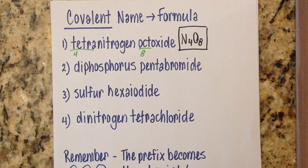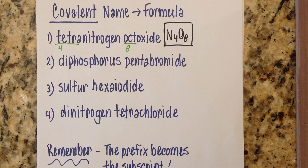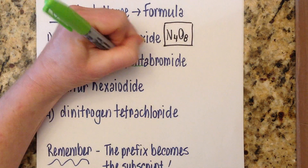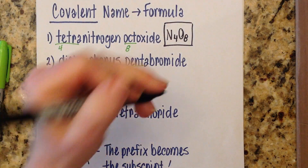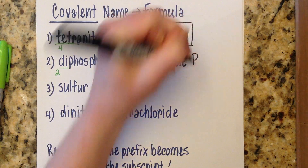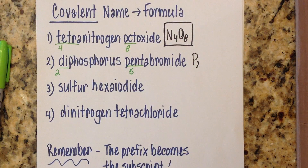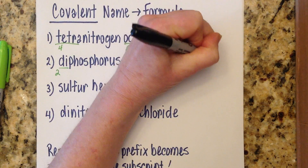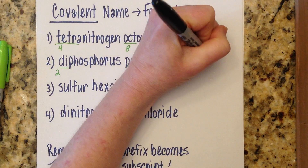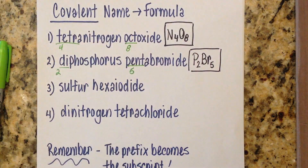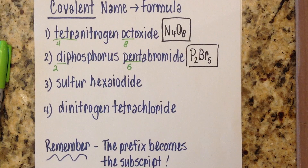Number two: diphosphorus pentabromide. Di means two, penta means five. The symbol for phosphorus is P — there are two of those. The symbol for bromine is Br — there are five of those, and you are done. P2Br5.